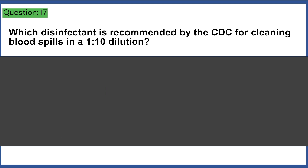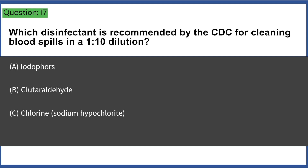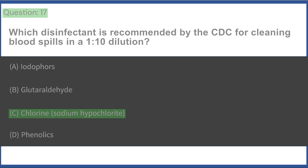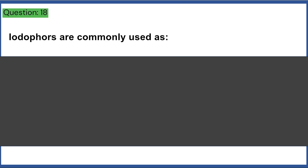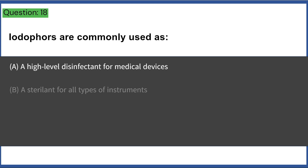Which disinfectant is recommended by the CDC for cleaning blood spills in a 1:10 dilution? a) iodophors, b) glutaraldehyde, c) chlorine/sodium hypochlorite, d) phenolics. Answer: C, chlorine/sodium hypochlorite.